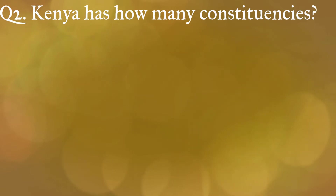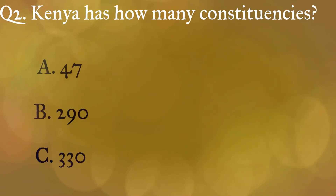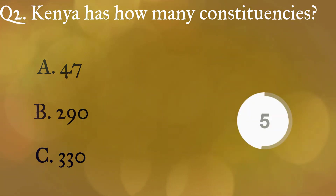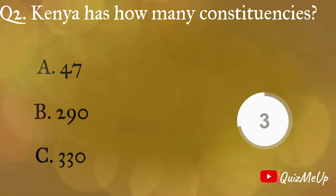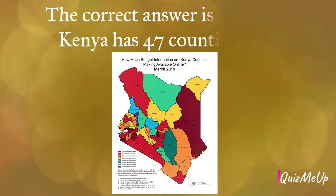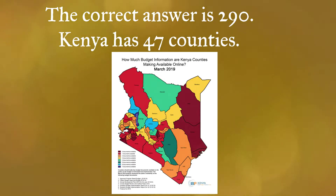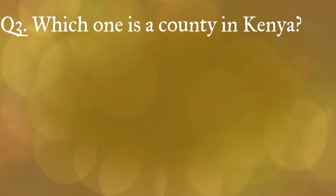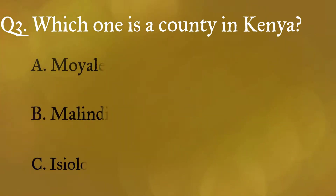Question 2: Kenya has how many constituencies? A: 47, B: 290, C: 330. The correct answer is 290. Kenya however has 47 counties.